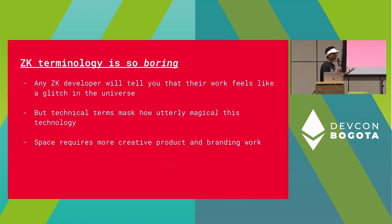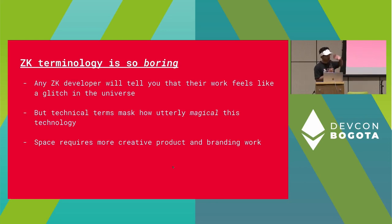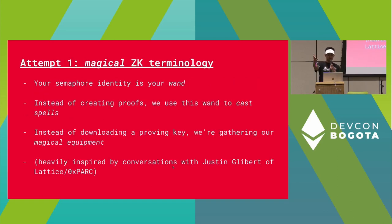Using terms like proving, verifying, zero-knowledge — all this stuff sort of obscures how magical this is to an end user. To really convince people how big of a paradigm shift we're making from centralized servers owning all your data to you owning all your data and then proving stuff about that, we're going to need new vocabulary, new products, new branding work. Heavily inspired by conversations with Justin, we've attempted to use magical terminology for all parts of the ZK stack.